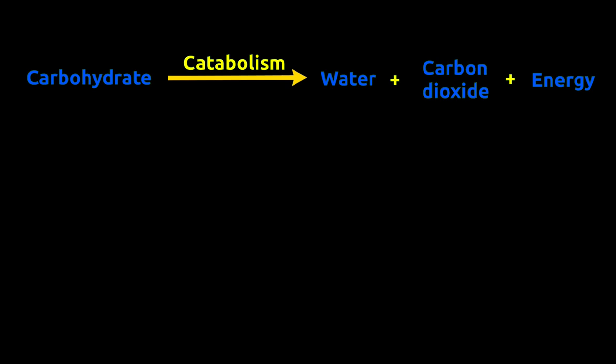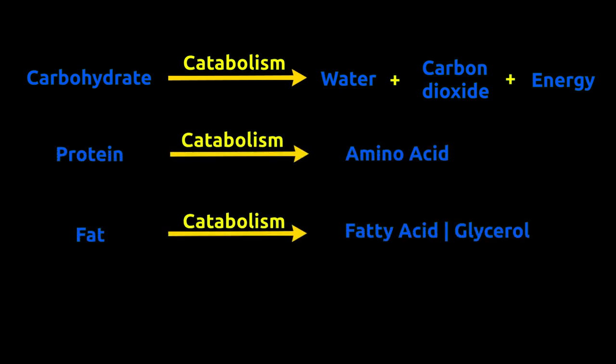For example, carbohydrates which are absorbed in the form of glucose get converted to carbon dioxide and water. This process releases energy. Proteins get converted to amino acid. Fats are also converted to smaller components such as fatty acid, glycerol, etc.